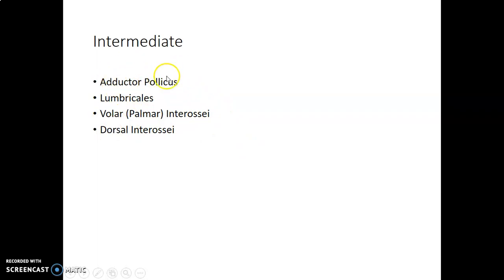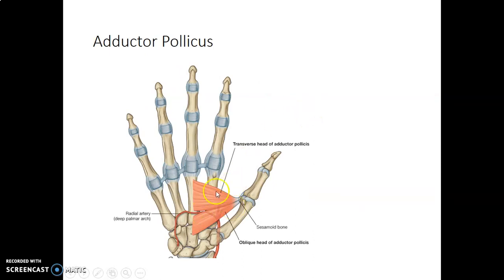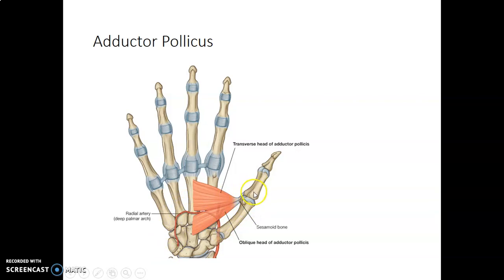Some books consider the adductor pollicis as part of the thenar eminence. You can see the adductor pollicis with its transverse head and oblique head — it has two heads.